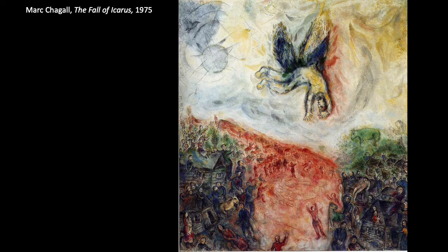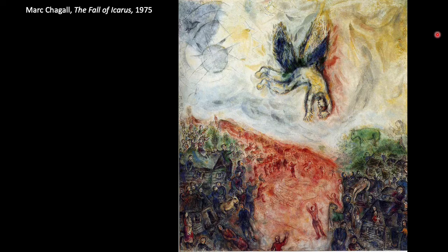Chagall has illustrated this critical moment in the story, really drawing attention to and emphasizing a particular moment in a sequence of moments. The focal point here is Icarus — he's larger in scale than the figures below him, positioned at the top center of the picture plane, and set apart from the sky by bold primary colors and brightly colored wings that contrast with the dull pale gray of the sky. This really emphasizes the flailing figure that Chagall has depicted with energetic brushstrokes.